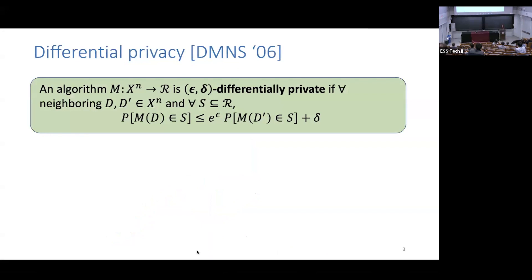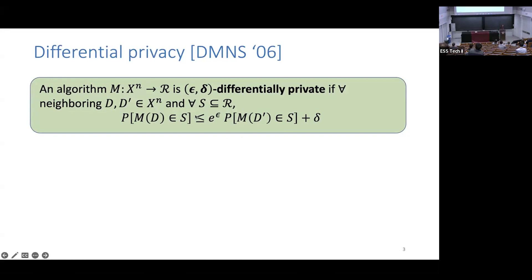Formally in math, it says this: if I have an algorithm M mapping from some n-tuple of data into some arbitrary output range R, I'll say that algorithm is epsilon-delta differentially private if for all neighboring databases — the same except for one person's data — and for all possible outputs, I produce that output with about the same probability under these two neighboring databases. If we ignore delta, we recover the same requirement on the ratio of outputs. Our privacy parameter epsilon appears in the exponent, so you really want these to be small.